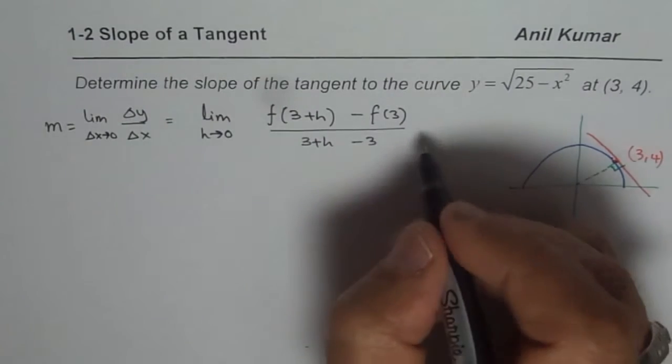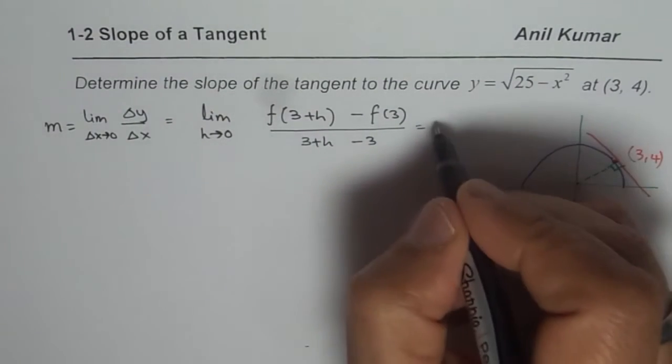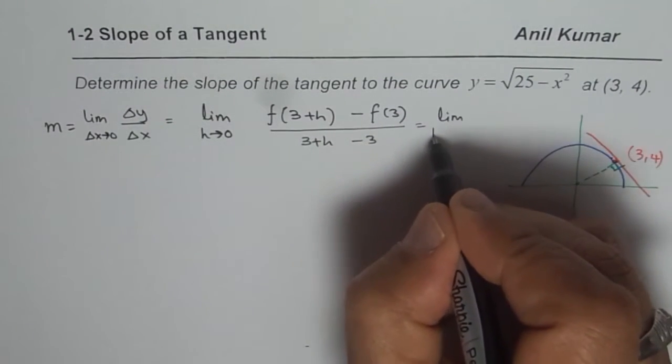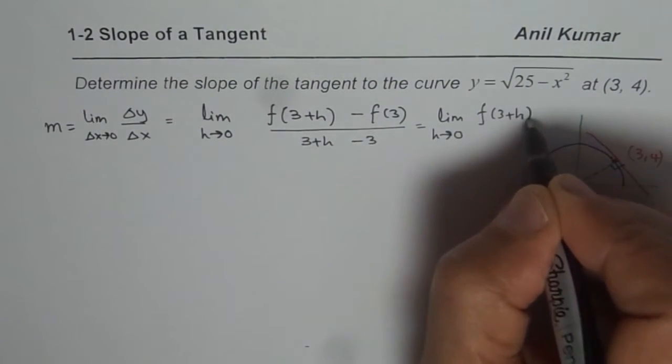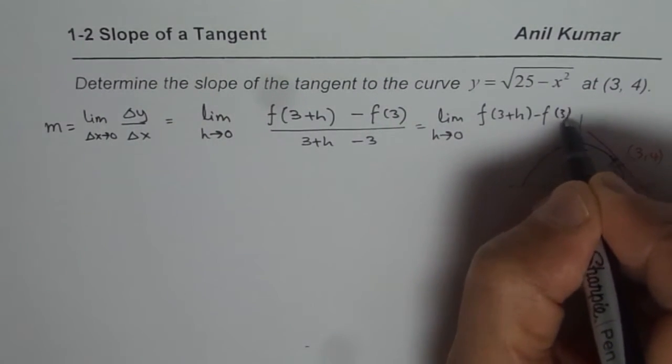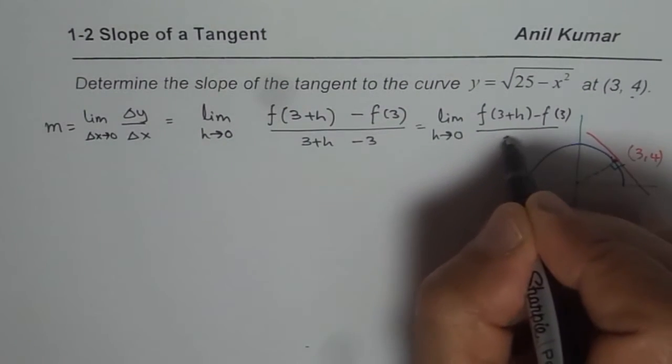So now let us find, well I could also reduce it a bit. So we can write this as limit h approaches 0, f of 3 plus h minus f of 3, f of 3 you know is 4, over h.